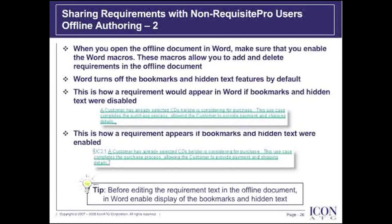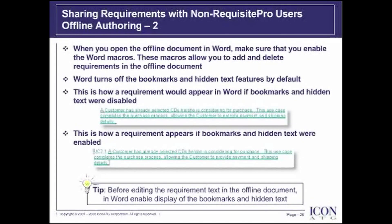You may need to adjust your Microsoft Word macro security levels to use the Requisite Pro commands for offline authoring, because Word defaults to the highest level for macro security. This setting prevents the enabling of Requisite Pro offline authoring macros. Set the macro security to medium on the security dialog box, available in Word by selecting Tools, Macro, and then Security.